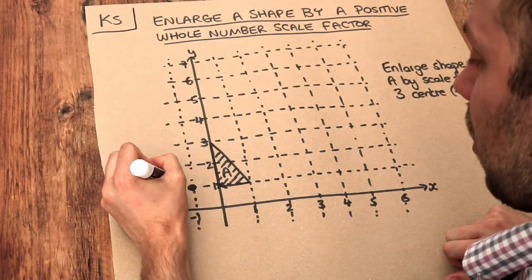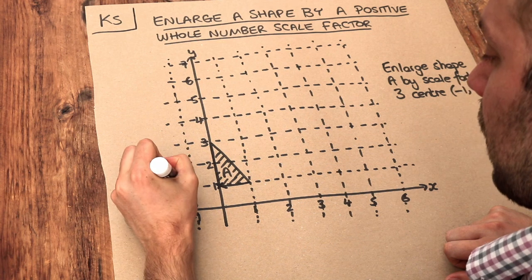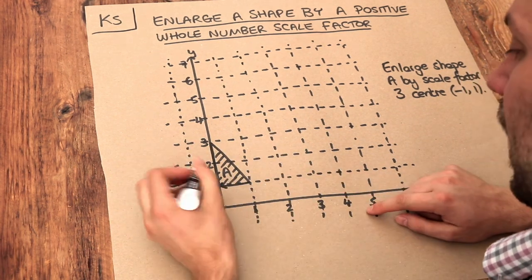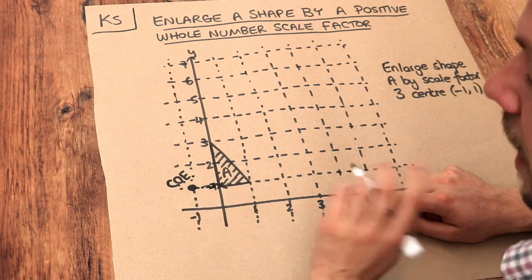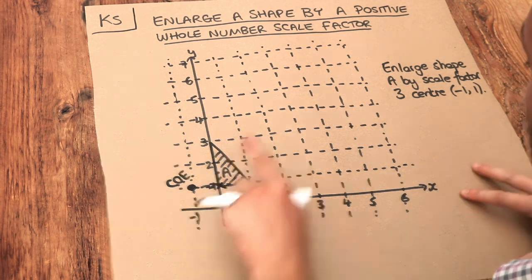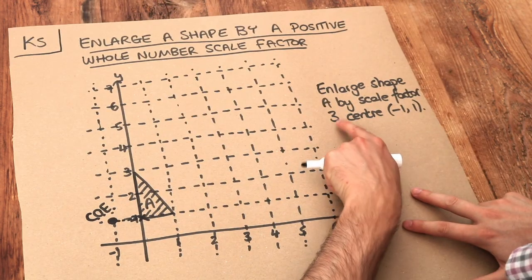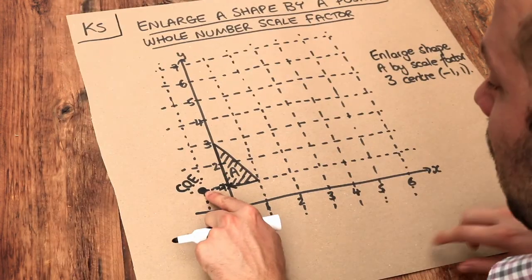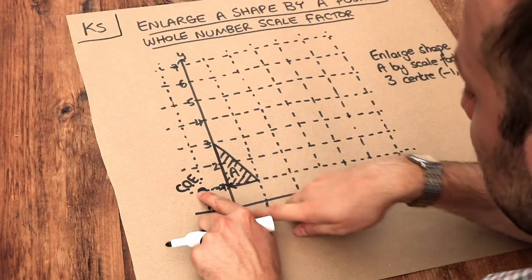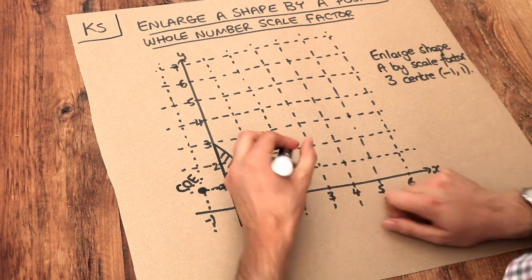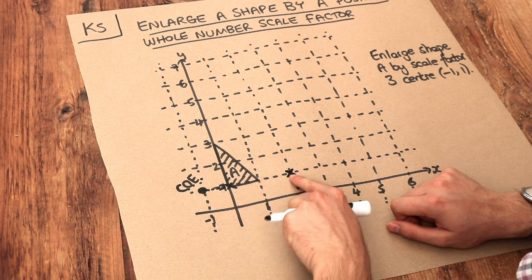So can you see from this centre of enlargement, to get to that point on this shape A it's one square right and there's no squares up at all. So the one right becomes three right because we times that one right by three. So now we go three right starting always from the centre of enlargement, so one right, two right, three right. This point ends up over here.